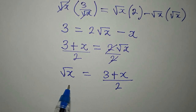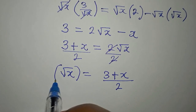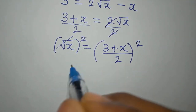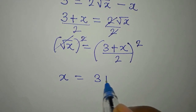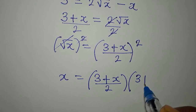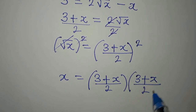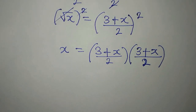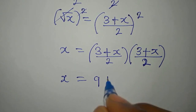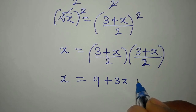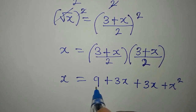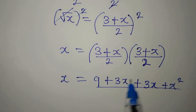And then to get x on the left, I would have to square this — the whole of this will be squared. This means that x is equal to (3 plus x) over 2 multiplied by (3 plus x) over 2. So let's open this bracket: x will be equal to 3 times 3 is 9, plus 3x, then x times 3 gives us plus 3x, then x times x gives us x squared.